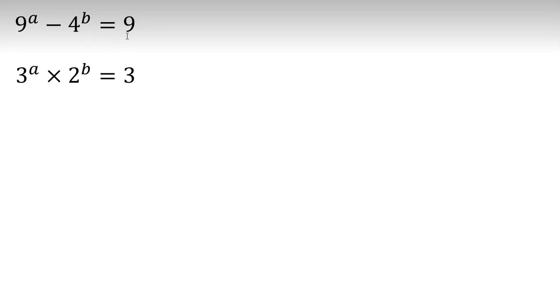9 to the A minus 4 to the B equals 9, and 3 to the A times 2 to the B equals 3. We want to find A and B, where A and B are real numbers.